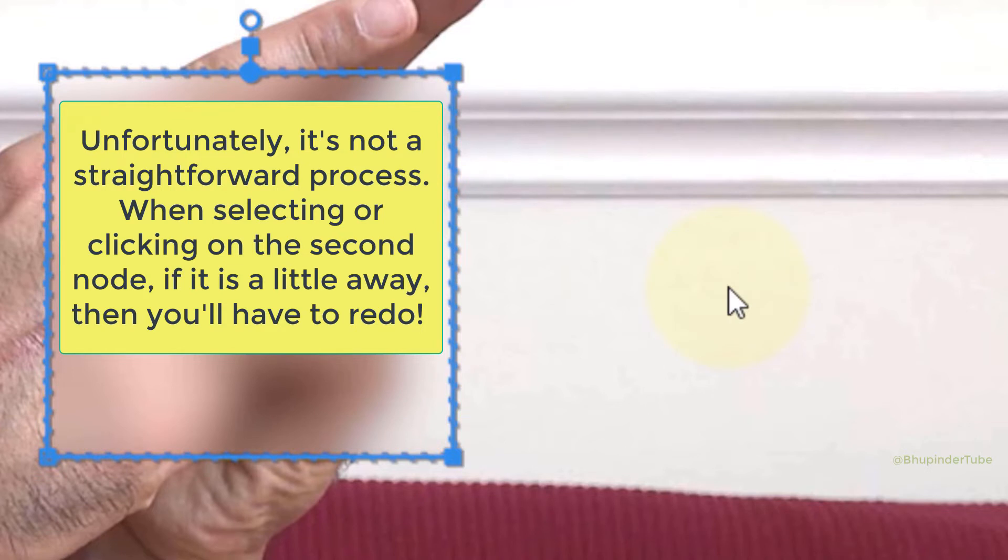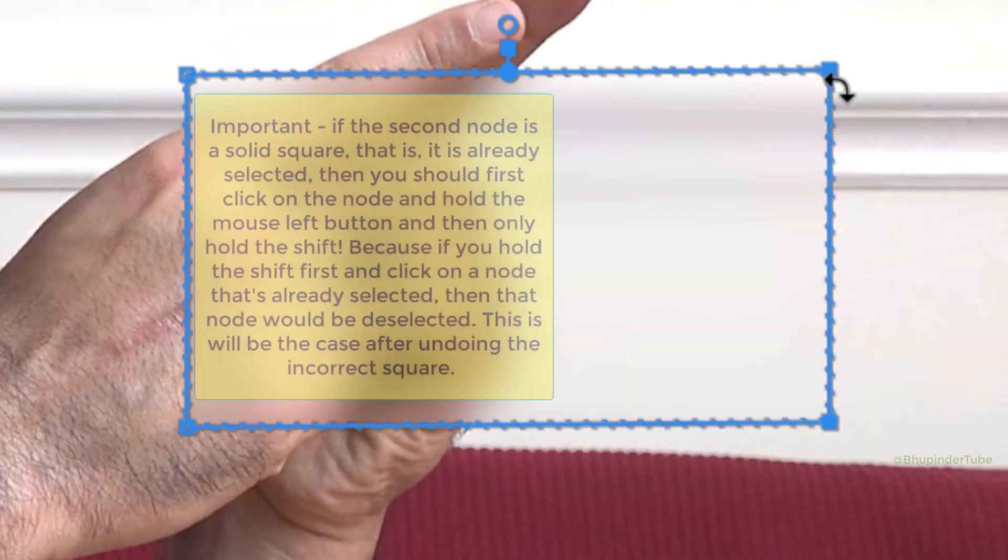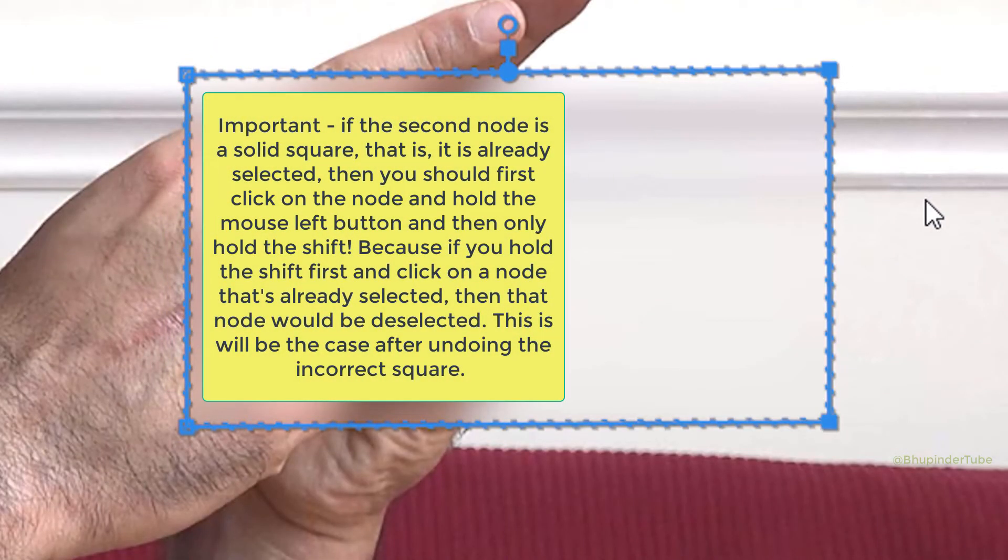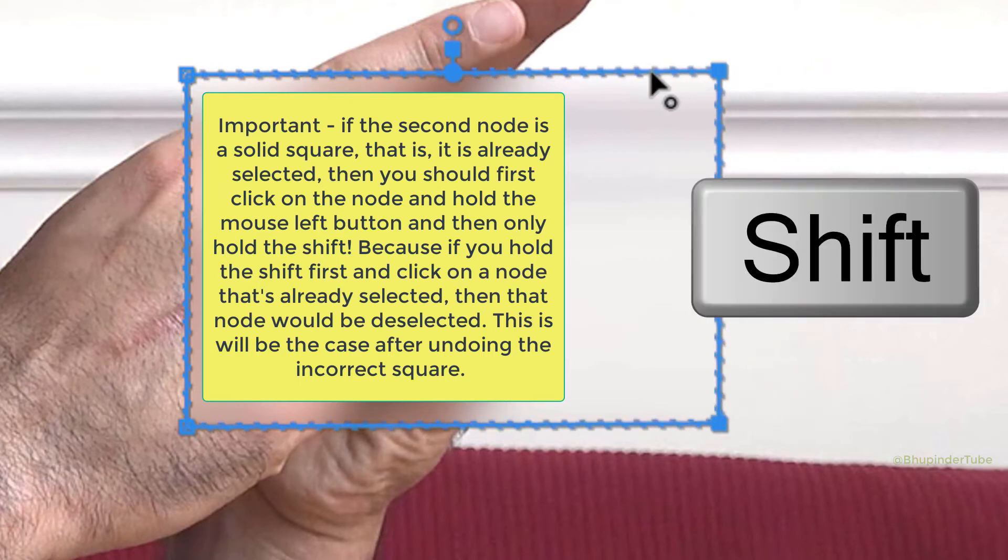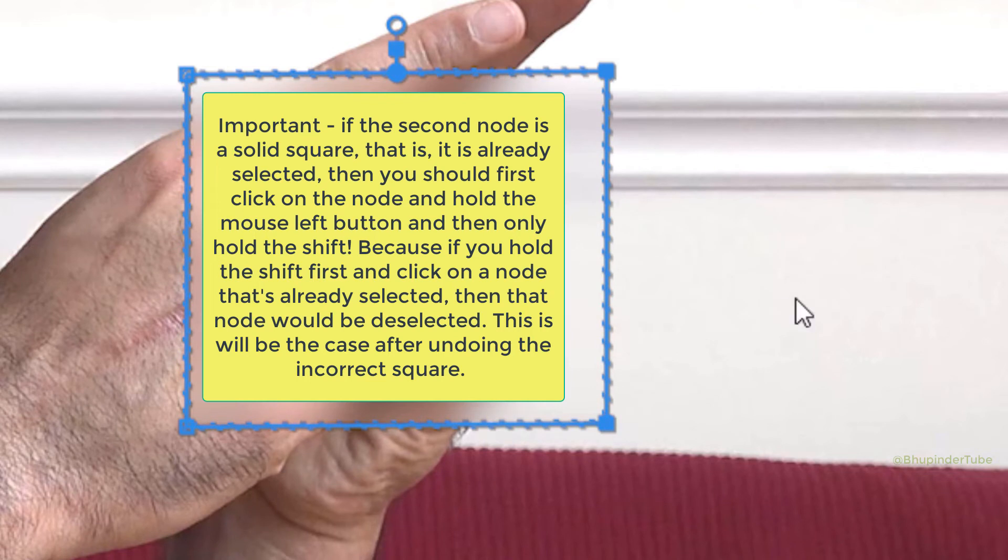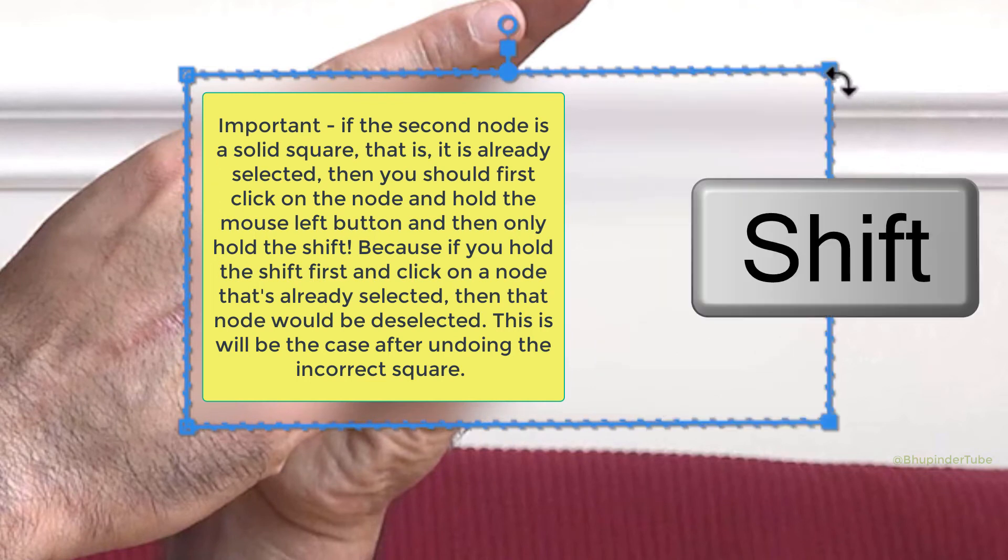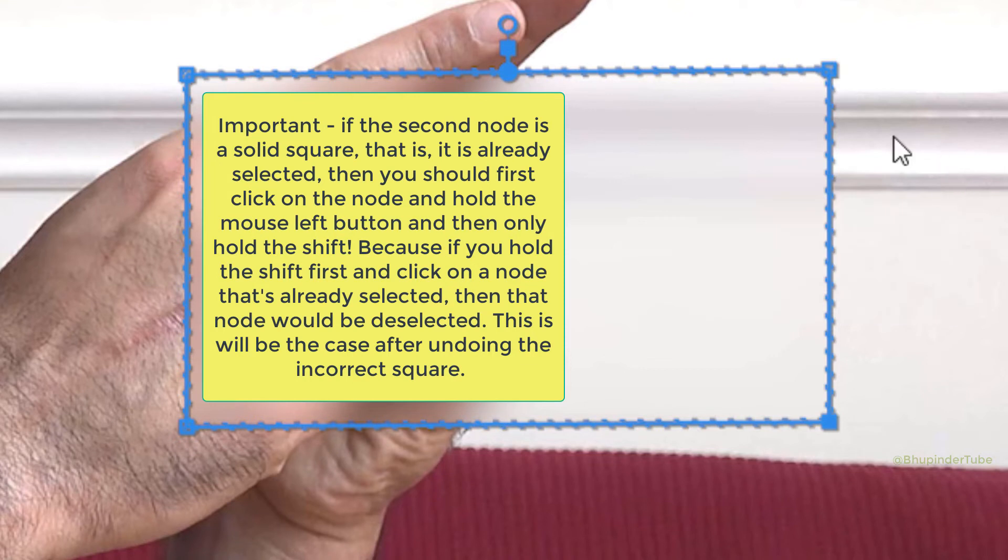Important: if the second node is a solid square—that is, it is already selected—then you should first click on the node and hold the mouse left button, and then only hold Shift. Because if you hold Shift first and click on a node that's already selected, then that node would be deselected.